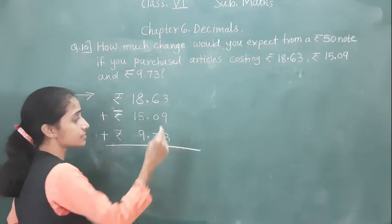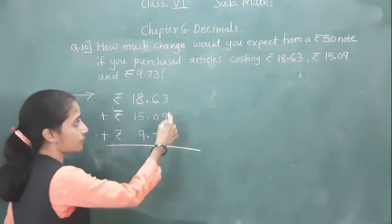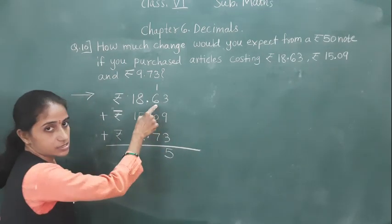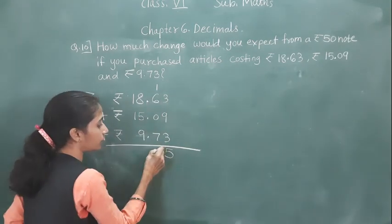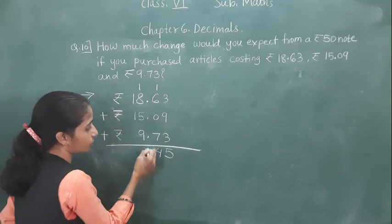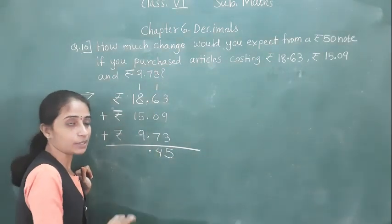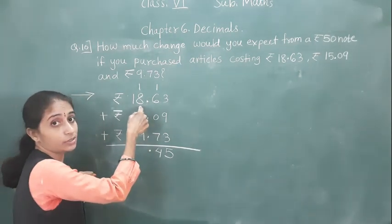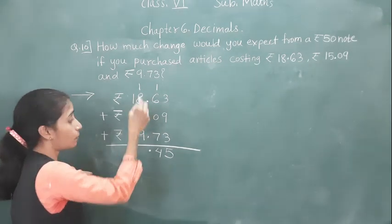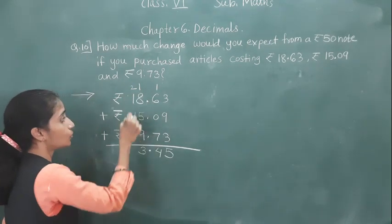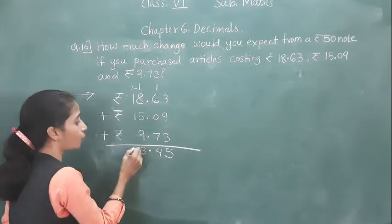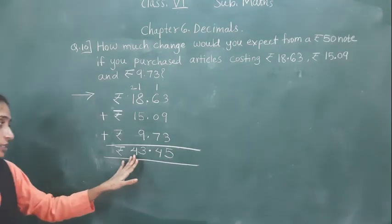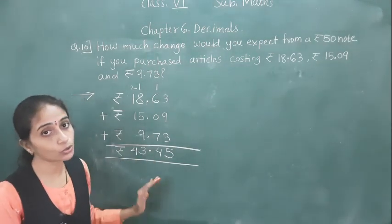Now add this. 3 plus 9 is 12, 12 plus 3 is 15 — 1 is carried. 7 plus 6 is 13, 13 plus 1 is 14 — 1 is carried, so 2. Now 9 plus 5 is 14, 14 plus 8 is 22, 22 plus 1 is 23 — write 2. 1 plus 1 is 2, 2 plus 2 is 4. So the total cost of articles is rupees 43.45.